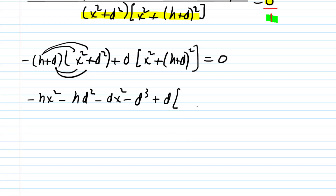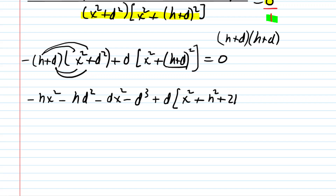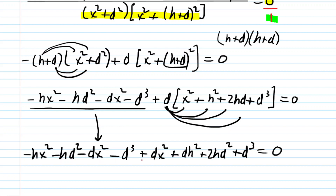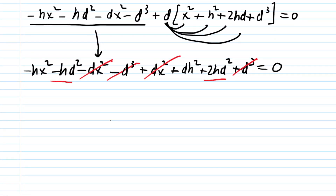Note that (H+D)² must be expanded as H² + 2HD + D². Now distribute D to all four terms: DX² + DH² + 2HD² + D³. Combined with the earlier terms, the −D³ and +D³ cancel, the −DX² and +DX² cancel, and −HD² + 2HD² gives +HD². We also retain +DH² and −HX².